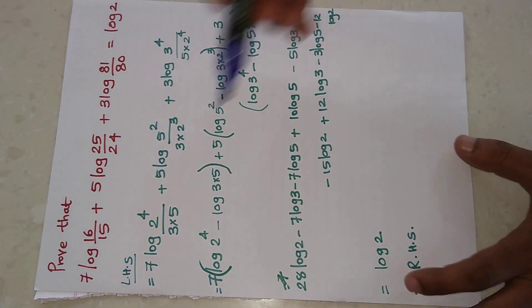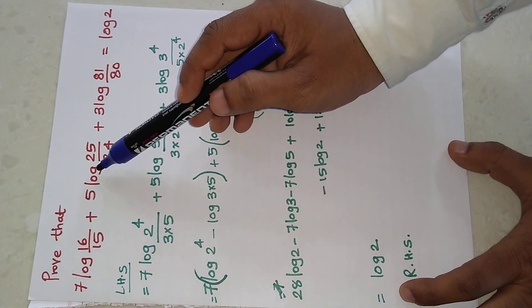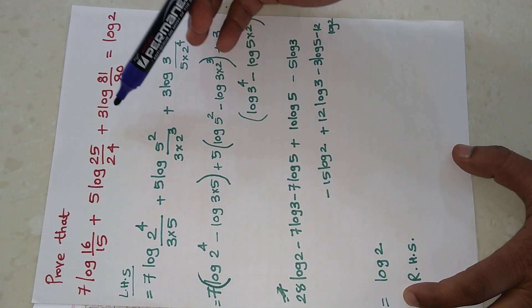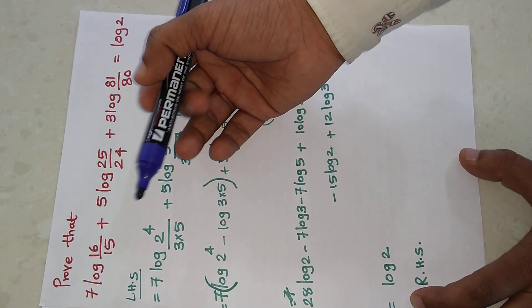Hello friends, today's topic is logarithm. We have to prove that 7 log(16/15) + 5 log(25/24) + 3 log(81/80) equals log 2. Starting with the left hand side, the first thing is...